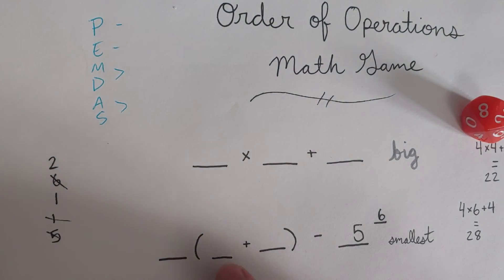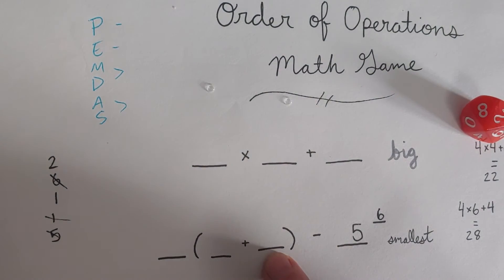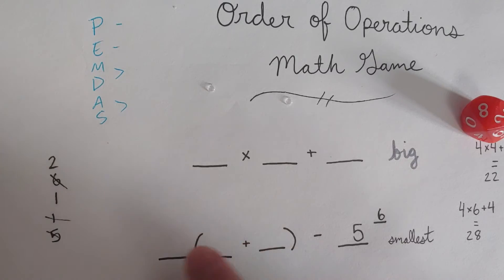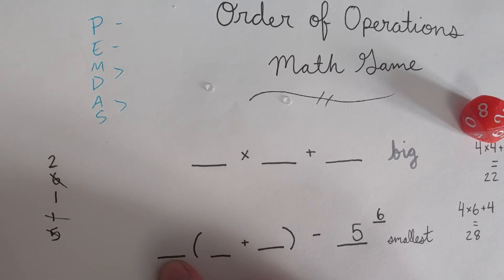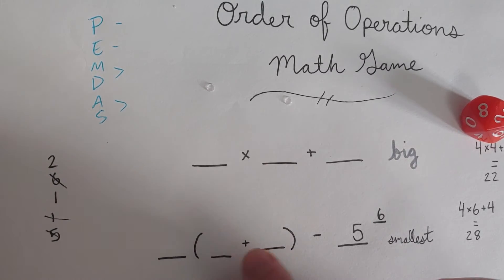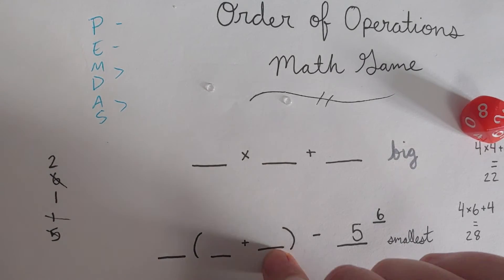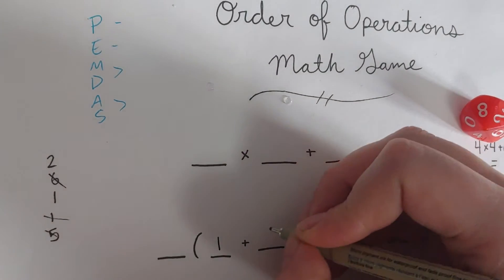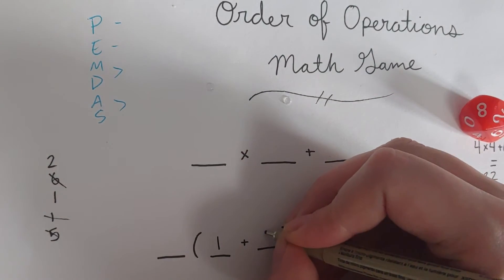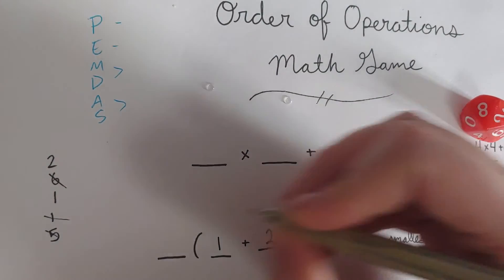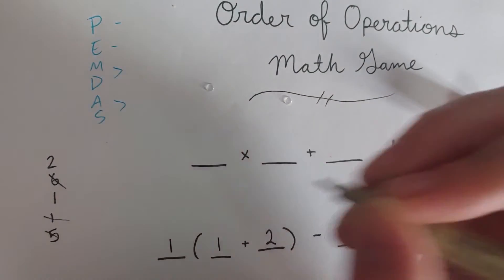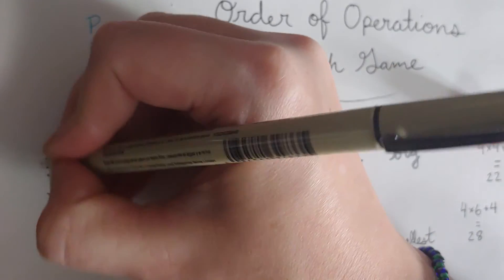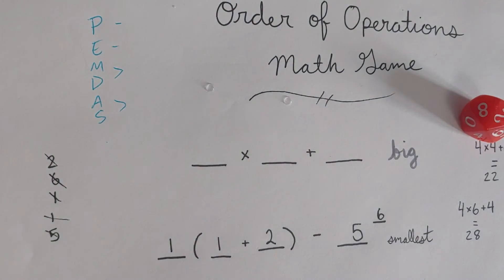Let's see — I can either do two plus one equals three times one, or one plus one equals two times two equals four. That second option is bigger, and I want small — so I'll go with one plus two equals three times one. Okay, I've used all my numbers, let's figure this out.